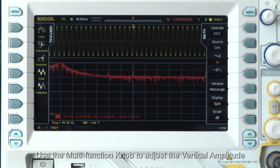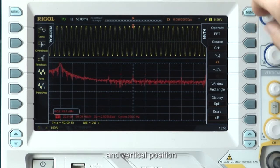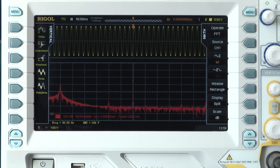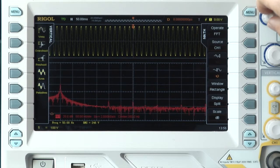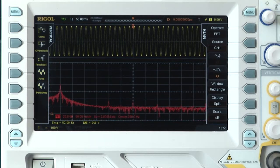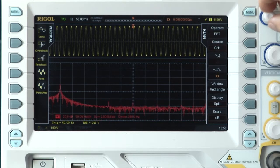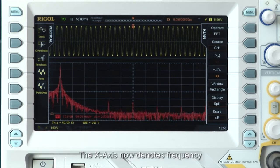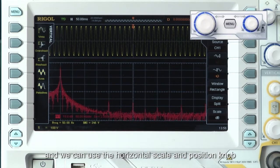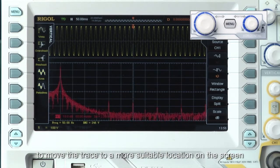Use the multifunction knob to adjust the vertical amplitude and vertical position. The X axis now denotes frequency. We can use the horizontal scale and position knobs to move the trace to a more suitable location on the screen.